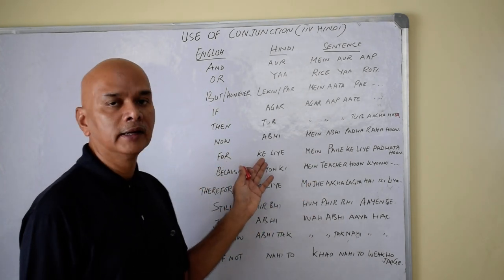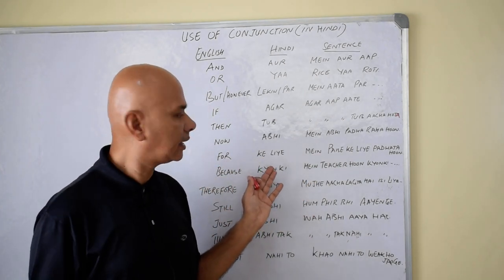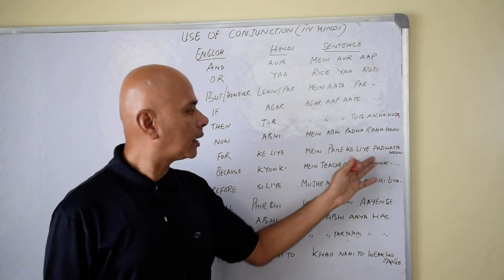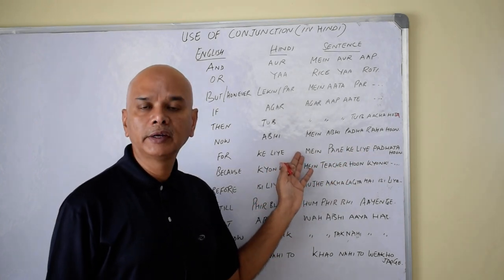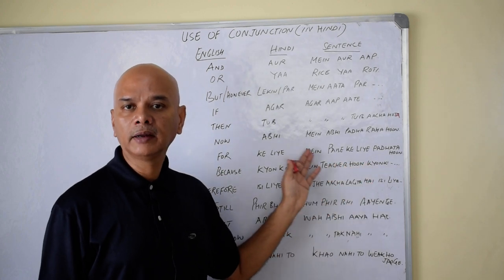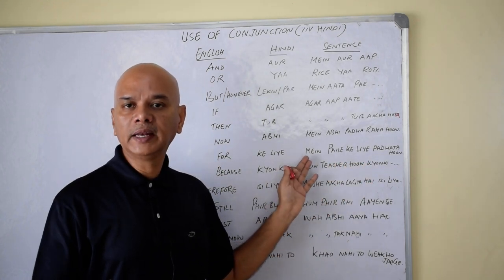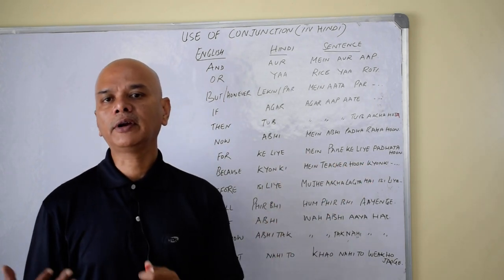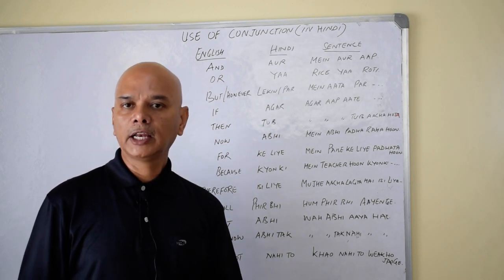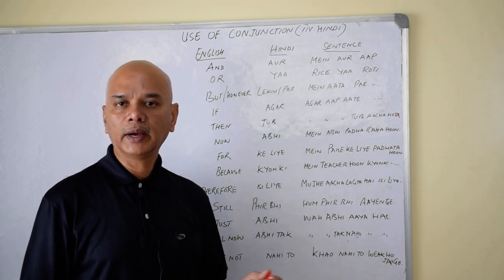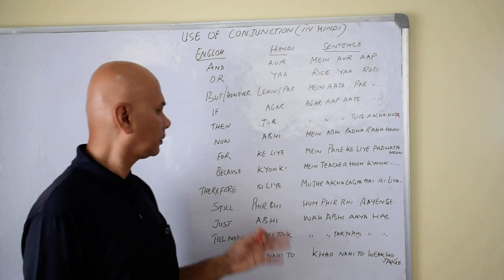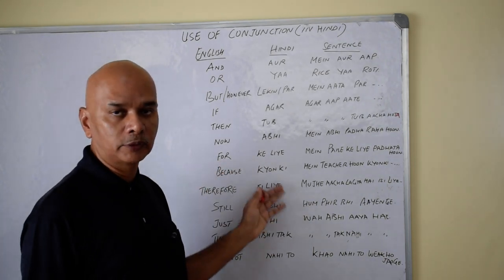'For' in Hindi is 'ke liye.' For example: Main paise ke liye padhaata hun — I teach for money. Main happiness ke liye padhaata hun — I teach for happiness. Main knowledge ke liye padhaata hun — I teach for knowledge. Ke liye is a very important word.